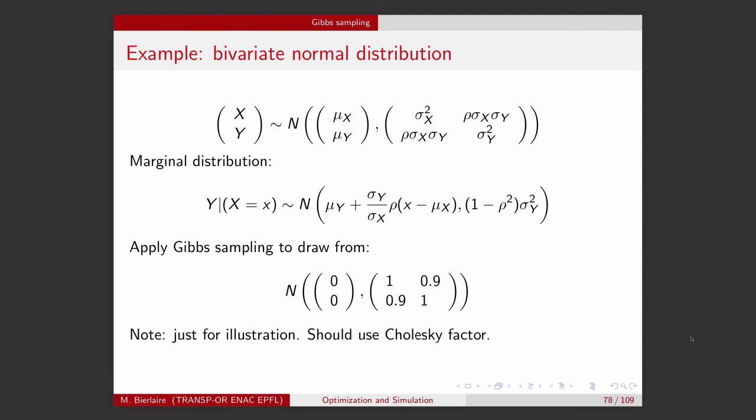Let's take an example. Let's draw from a bivariate normal distribution. Well, of course, this is just for illustration. There are better ways to draw from a normal distribution. But I take this simple example to illustrate the use of Gibbs sampling in this context. I will need to use the marginal distribution. So this is the marginal distribution of the bivariate normal. So if x equals x, the y follows a normal distribution. And the mean is defined by this. And the variance is defined by this. And these are the entries of the variance covariance matrix that we see here.